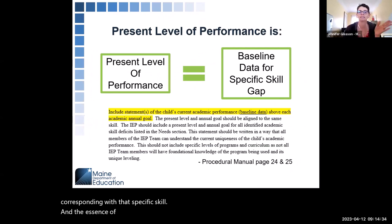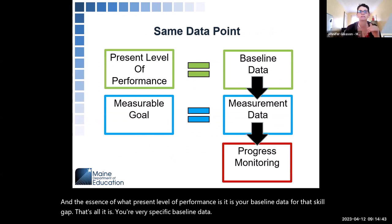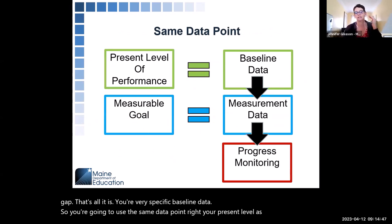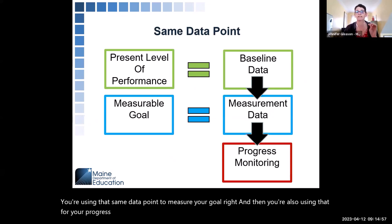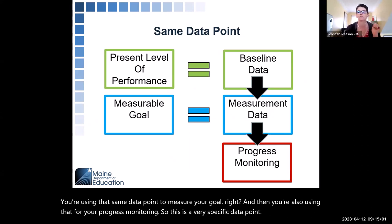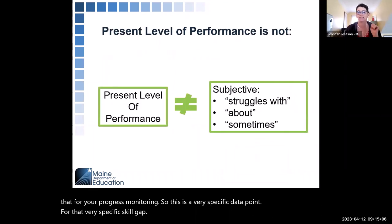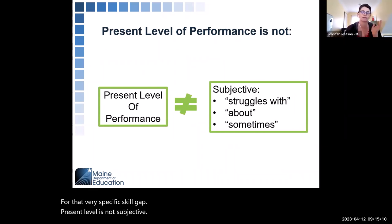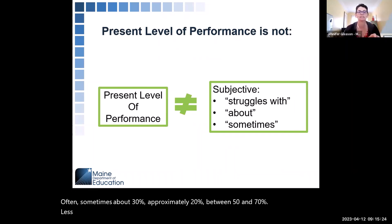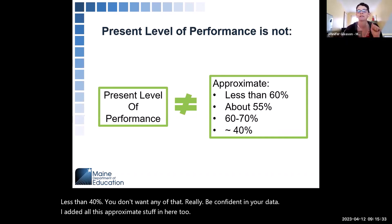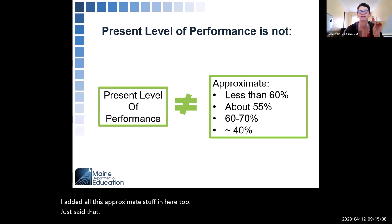The essence of present level of performance is that it is your baseline data for that skill gap — that's all it is, your very specific baseline data. You're going to use that same data point for your present level, to measure your goal, and for your progress monitoring. Present level is not subjective. Avoid 'struggles with,' 'often,' 'sometimes,' 'approximately 20%,' 'between 50% and 70%,' 'less than 40%' — you don't want any of that. Be confident in your data. Even if it's a new student and you only have time to do a quick probe, that's your baseline data. If you did one probe and they're at 43%, you put 43%.